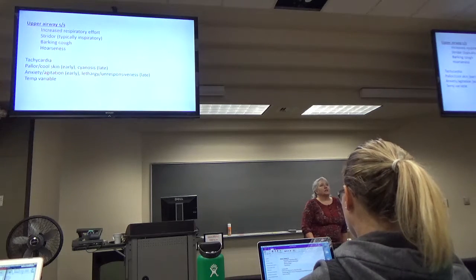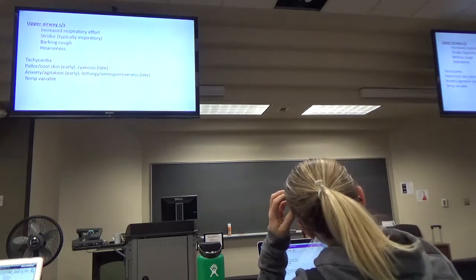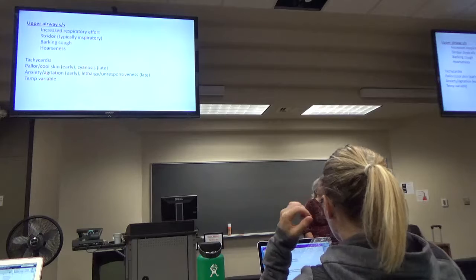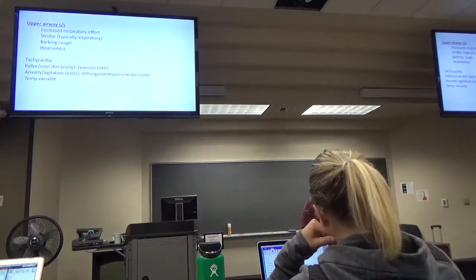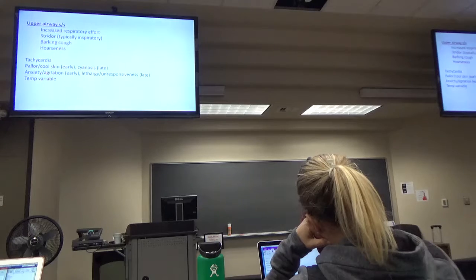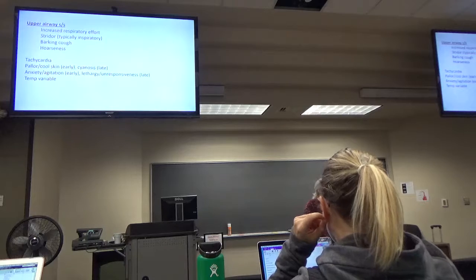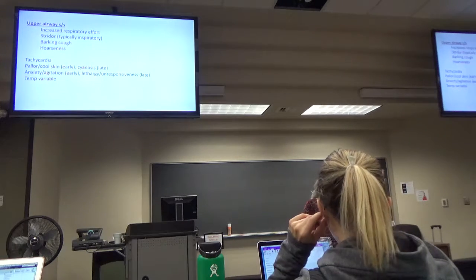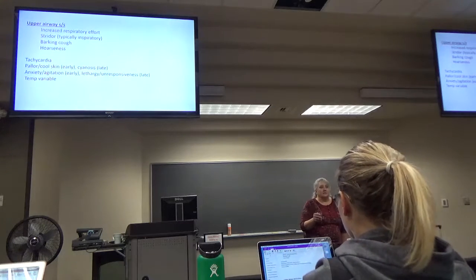Upper airway obstruction signs and symptoms: increased respiratory effort, stridor, barking cough and hoarseness. They can also have tachycardia, pallor, cool skin early, cyanosis late, anxiety and agitation early, lethargy and unresponsiveness late, and variable temp depending on the cause.